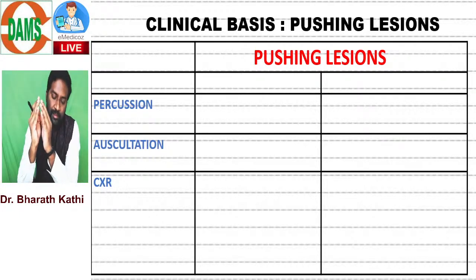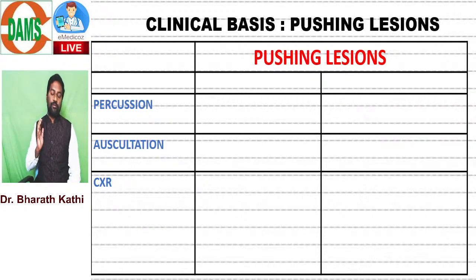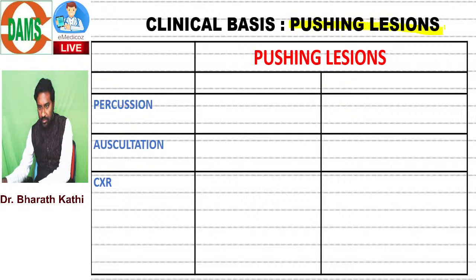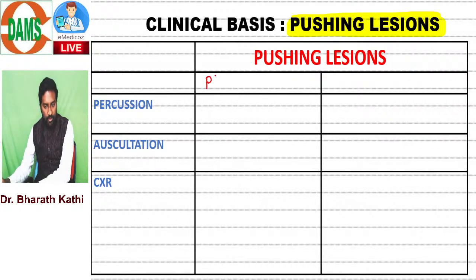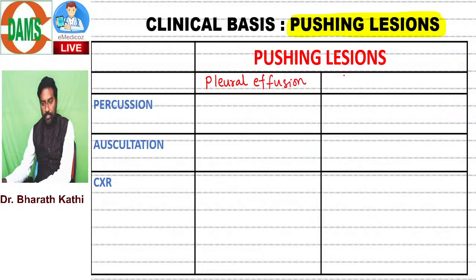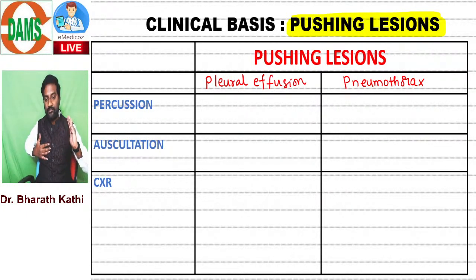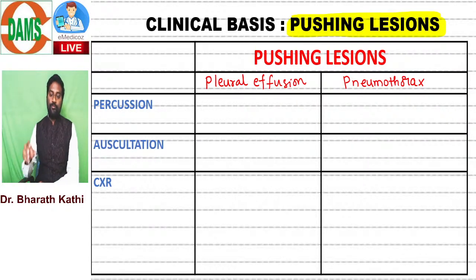These are all pleural collections - there can be air or fluid. Whenever there is air or fluid, the intrapleural pressure can increase and cause a push of the mediastinum to the opposite side of the disease. That's why pleural diseases are generally considered pushing lesions. If filled with fluid, we call it pleural effusion; if filled with air, we call it pneumothorax. If there is right-sided pleural effusion, the trachea will shift towards the left; if left-sided pneumothorax, the trachea shifts towards the right.